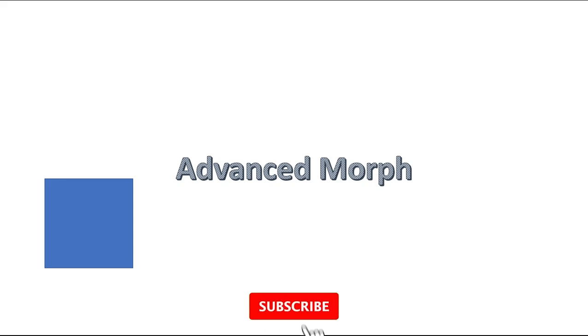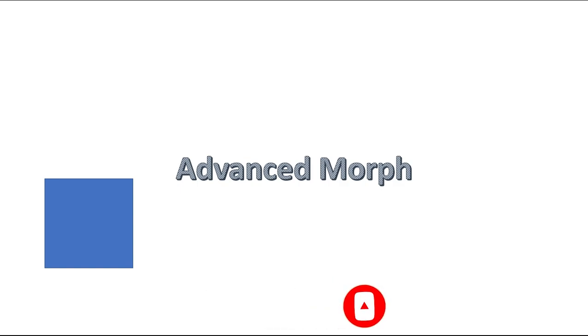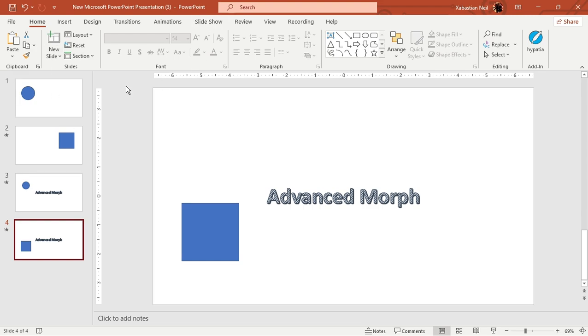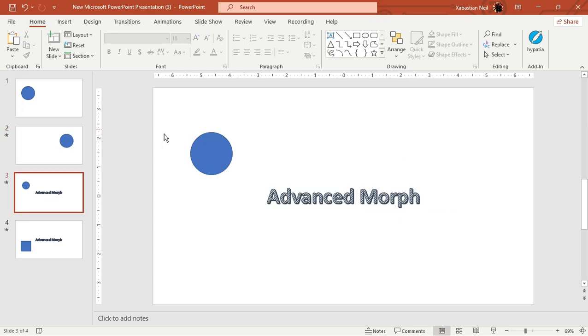As you can see, the circle turned into a square and again it moved from one place to another. But that is the difference of Advanced Morph and Morph. Now I will go back and show you what actual Simple Morph is. What I'm going to do is just show you what Basic Morph is.